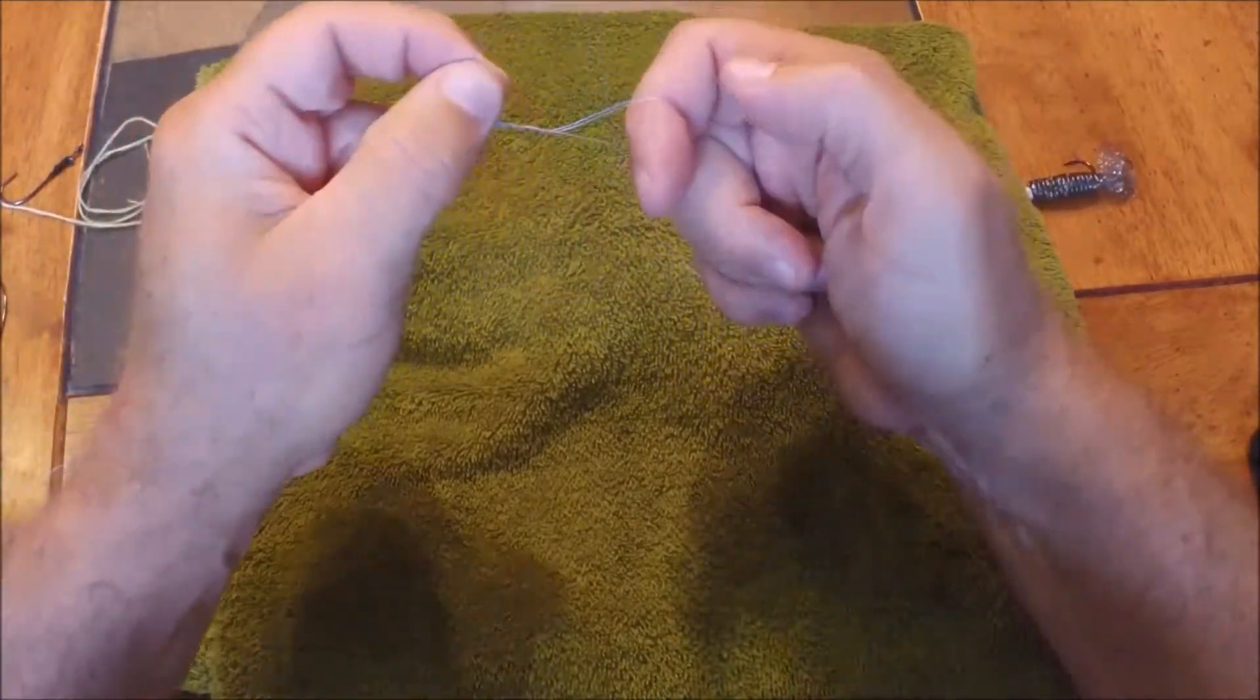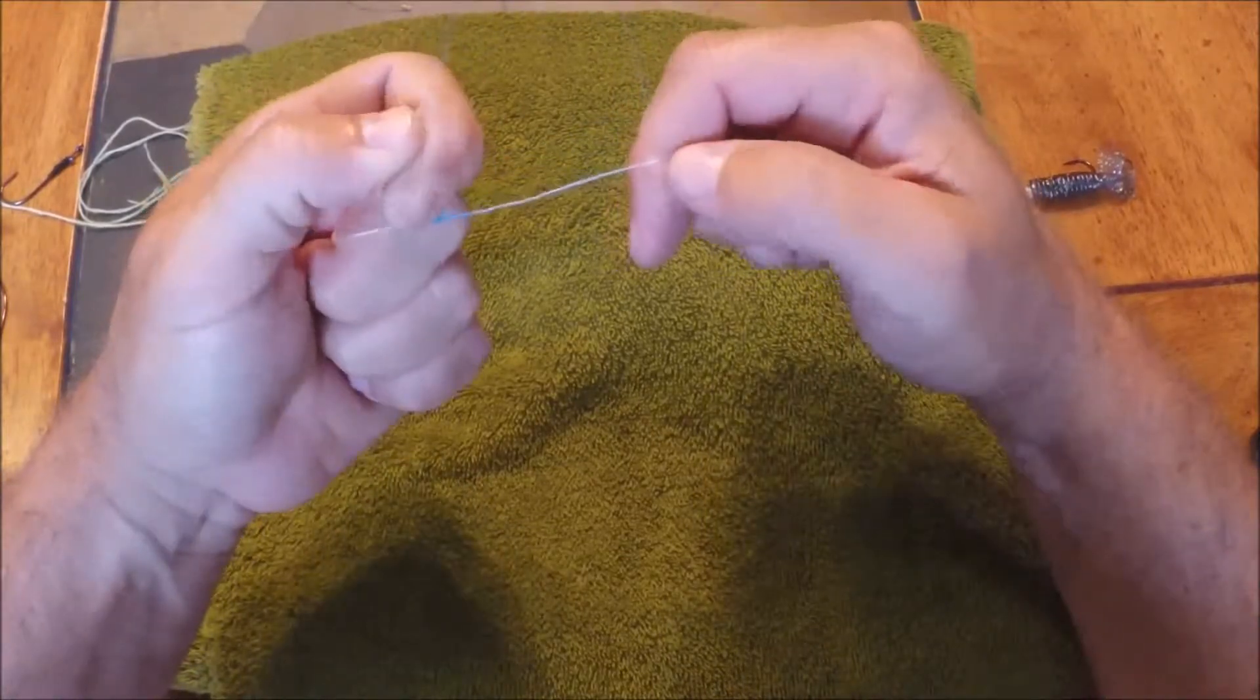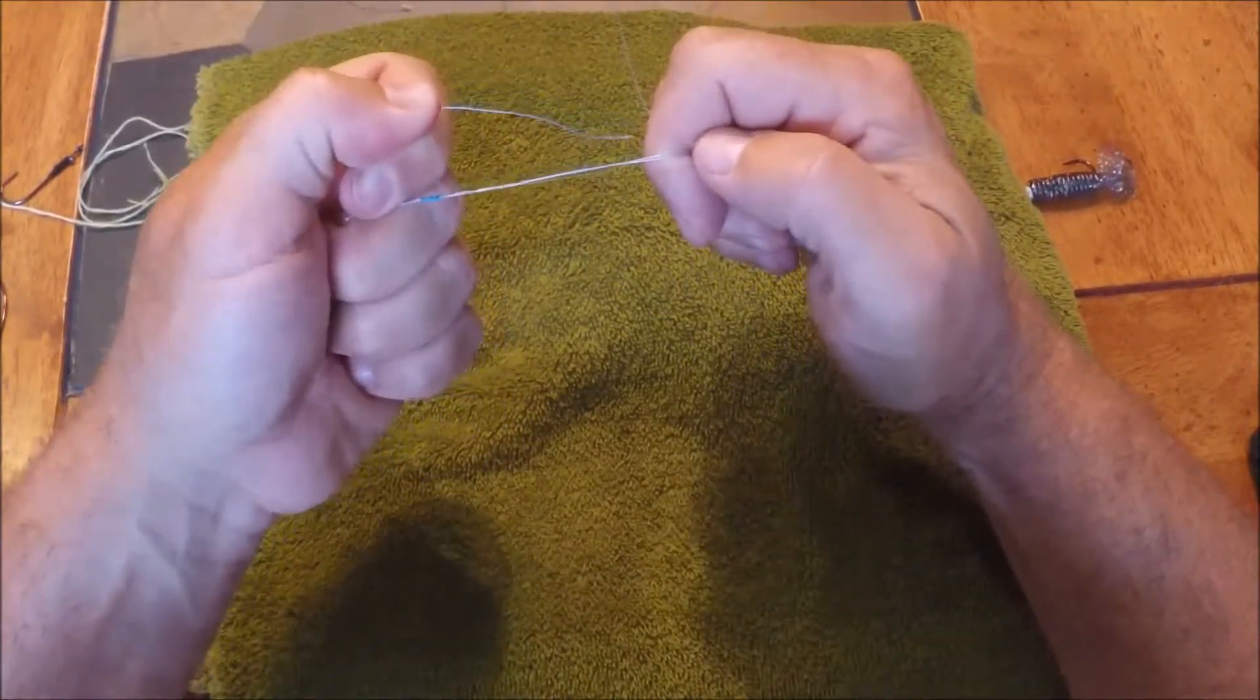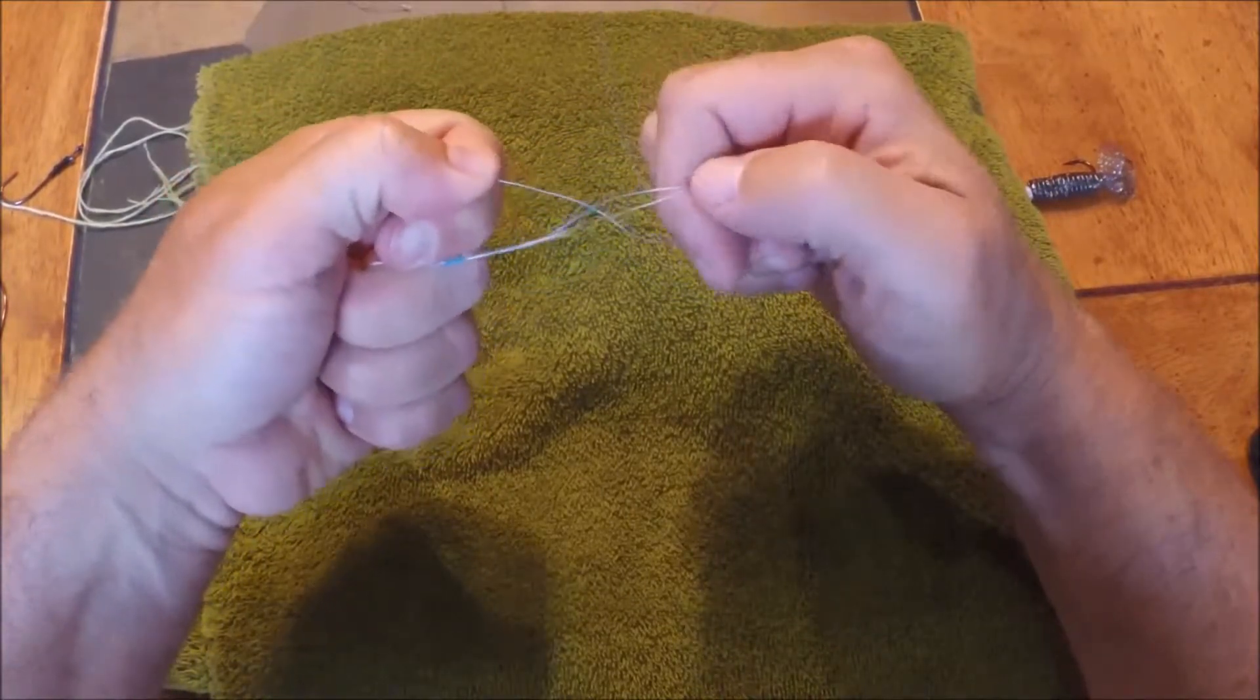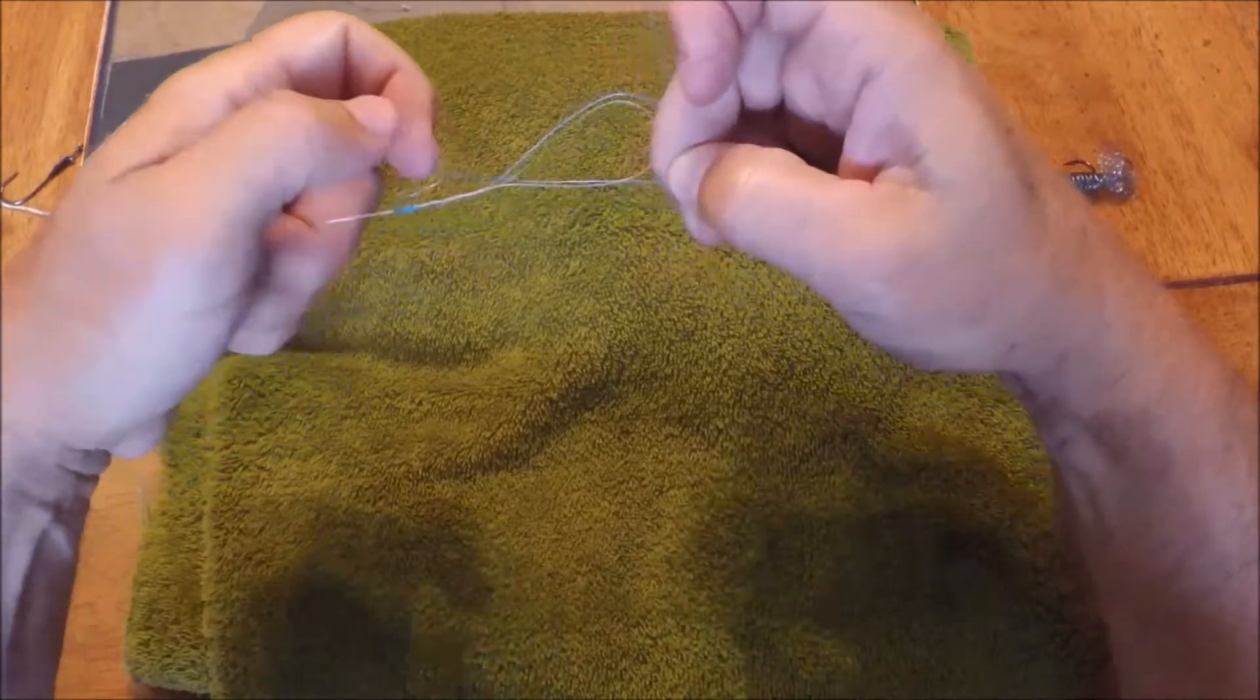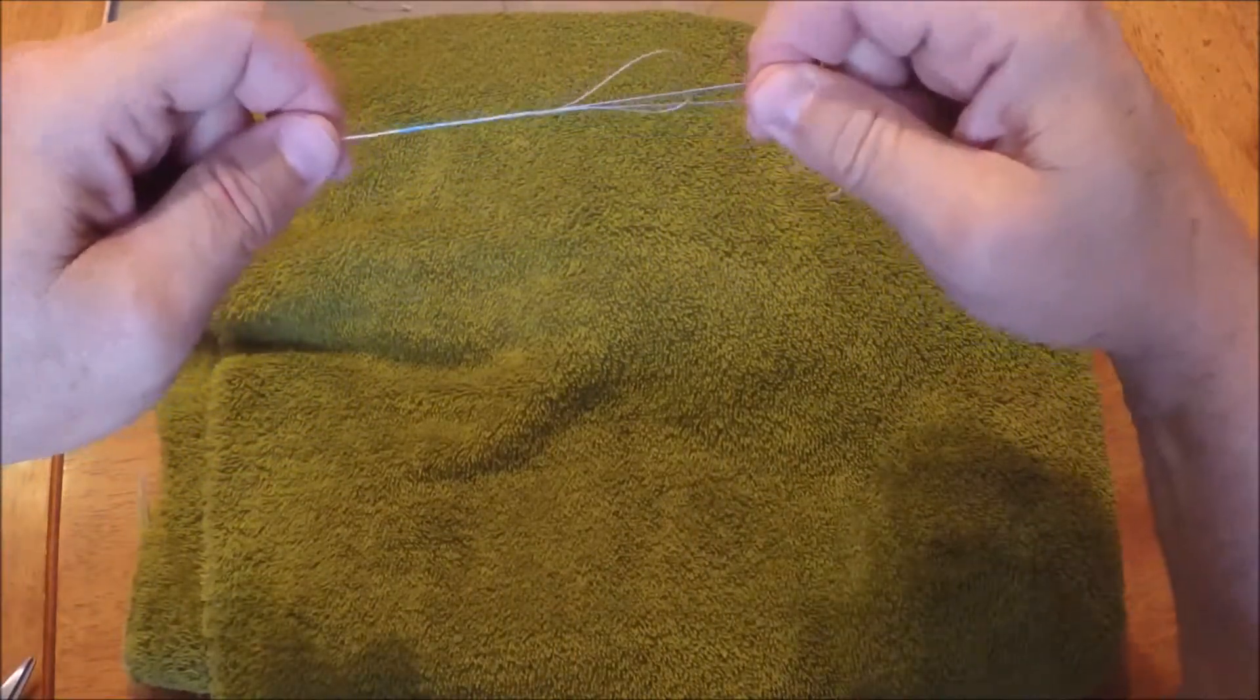Now if you noticed the direction I put my finger in that first loop, I did that on purpose so that I know which direction I want this to go back through. It's the direction my finger is pointing. Okay, the knot is done. Now all I need to do is cinch it up together. So I start pulling on the main line.